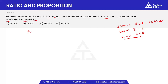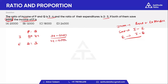Starting with PQ income ratio 3 to 4. The expenditure ratio is 2 to 3. Both of them save 6,000 rupees. The income ratio is 3 to 4. Income and savings: 3 parts equals 2,000 rupees. The expenditure ratio gives 1,000 rupees for 3,000 rupees. The income ratio gives 3,000 rupees, and 18,000 equals 18,000.